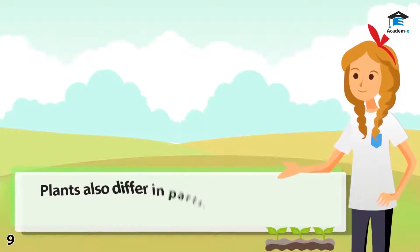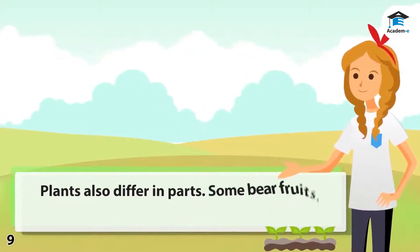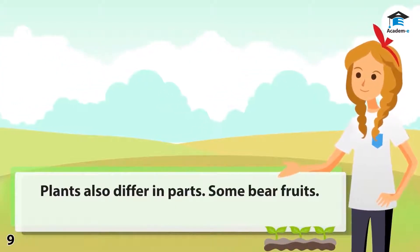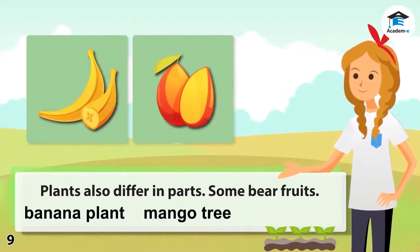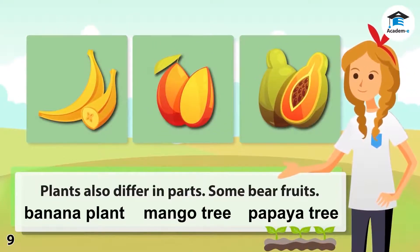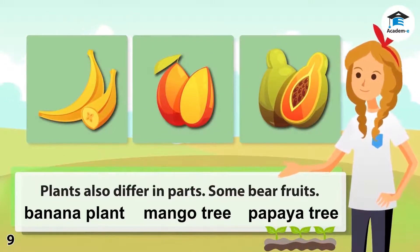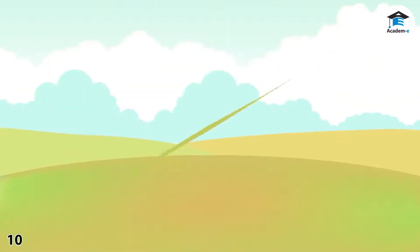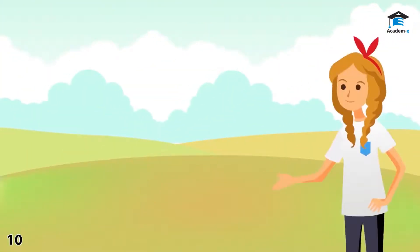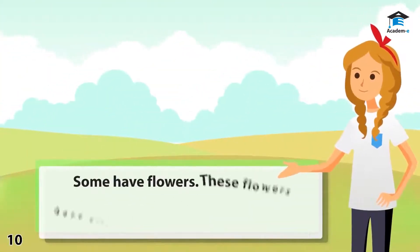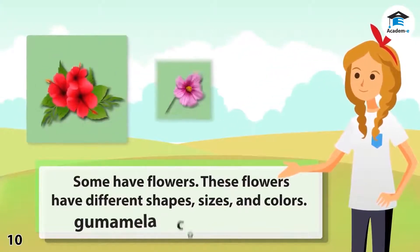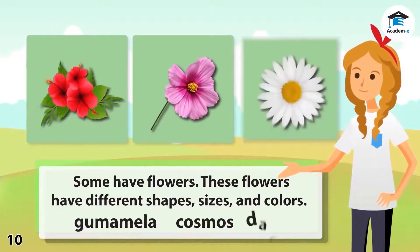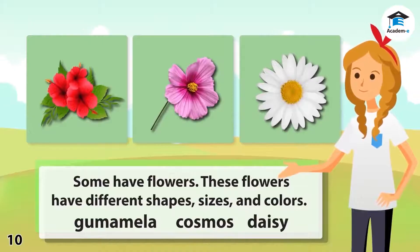Plants also differ in parts. Some bear fruits — examples are banana plant, mango tree, and papaya tree. Some have flowers. These flowers have different shapes, sizes, and colors. Gumamela, cosmos, and daisy are examples of these.